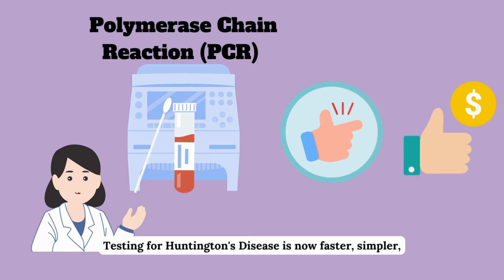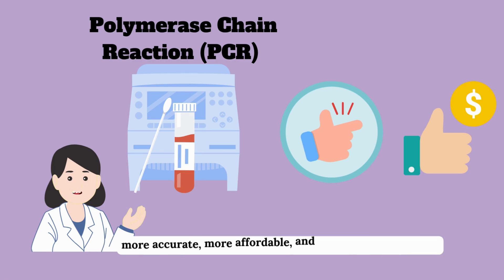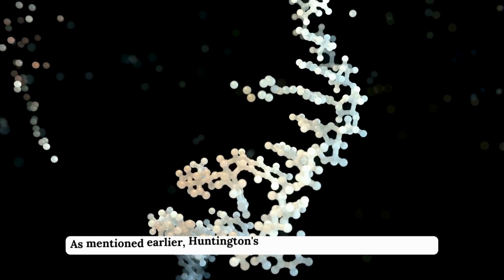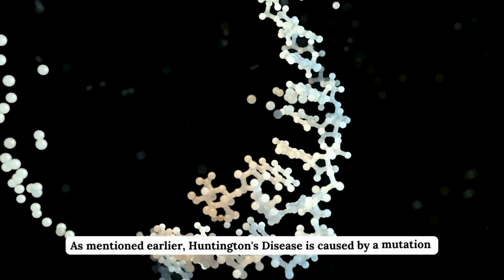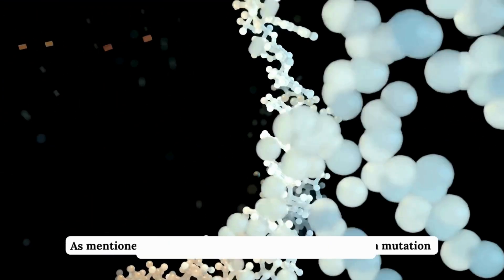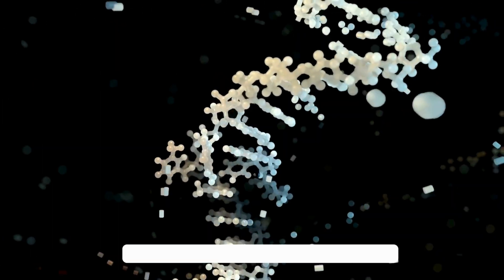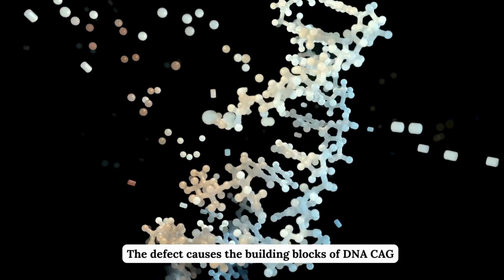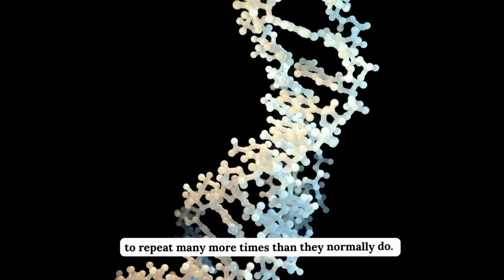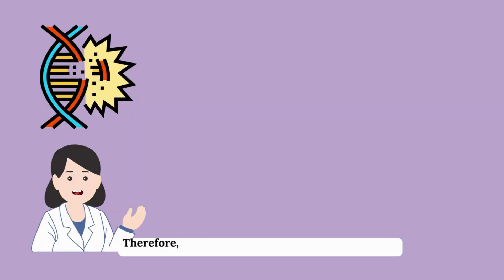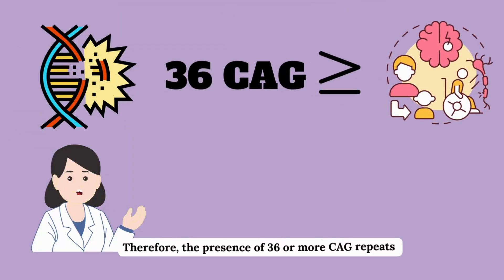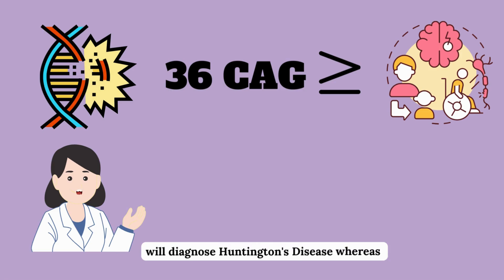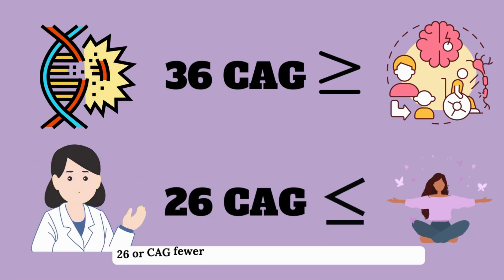Testing for Huntington's disease is now faster, simpler, more accurate, more affordable and more widely available. Huntington's disease is caused by a mutation in the Huntingtin gene. The presence of 36 or more CAG repeats confirms a diagnosis of Huntington's disease, whereas 26 or fewer CAG repeats rules it out.